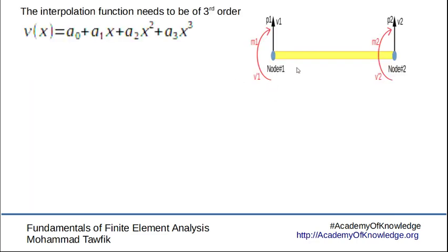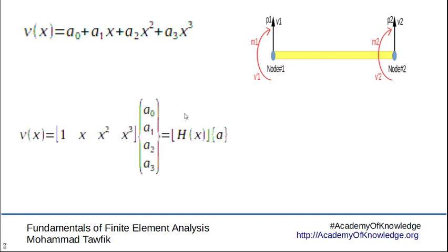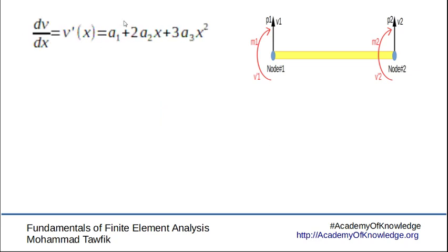Now, since we have four degrees of freedom, we will need a four-term polynomial, which is a cubic polynomial, to represent the deflection of the beam, or the deflection of the element between the two nodes. Again like before, we will present the deflection function in a vector form with an H row vector and an a column vector, where a is the generalized coordinates or the unknown coefficients. Then we force this polynomial to satisfy the boundary conditions.